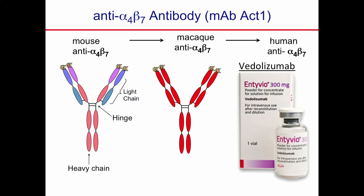To test this idea, we decided to look in an animal model. We used an antibody specific for alpha 4 beta 7 — an antibody discovered in the 1990s called Act 1. It's a very unique antibody; no one's ever been able to make one quite like it again, although they've tried very hard. Our colleagues Tav and Sari had taken this mouse antibody and primatized it — replacing the mouse heavy chains with macaque heavy chains. Other people have taken this antibody and humanized it to treat Crohn's disease, an inflammatory bowel disease.